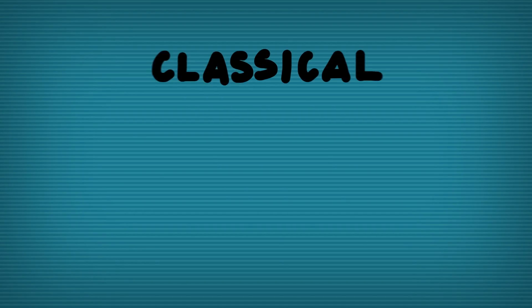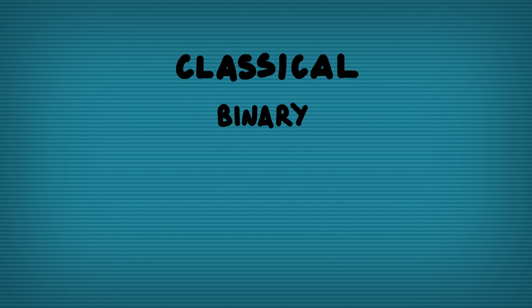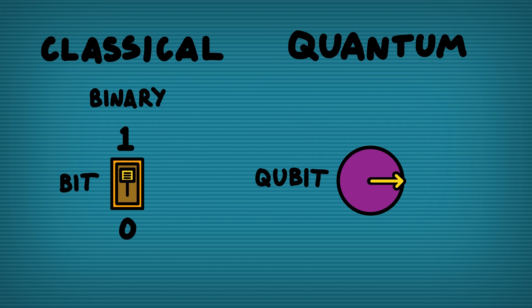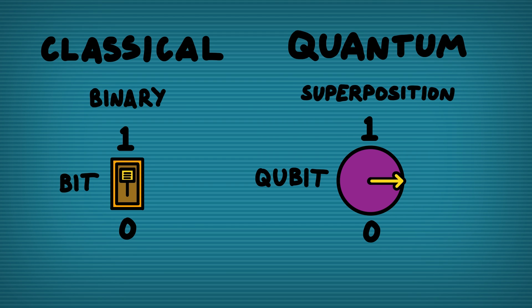To explain quantum supremacy it's worth explaining how quantum computers work. As physicists we call normal computers classical computers, and classical computers work with binary — there are lots of bits that can either be in a state of 0 or 1. In a quantum computer you have quantum bits, qubits, which can be in the state 0 or 1, or they can be in a special intermediate state called a superposition. It's a special phenomenon in quantum physics that quantum computers take advantage of.